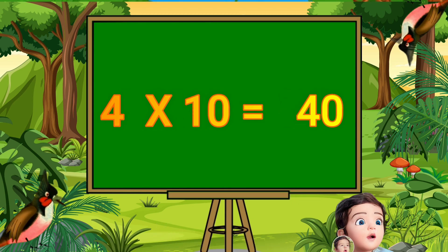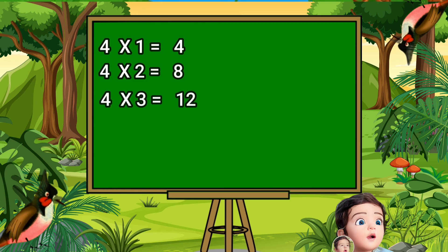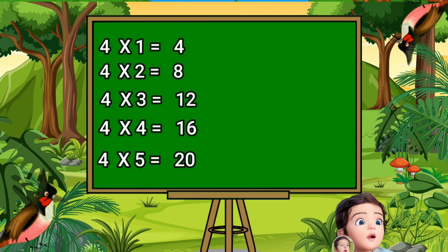Four ones are four. Four ones are four. Four twos are eight. Four twos are eight. Four threes are twelve. Four threes are twelve. Four fours are sixteen. Four fives are twenty. Four fives are twenty.